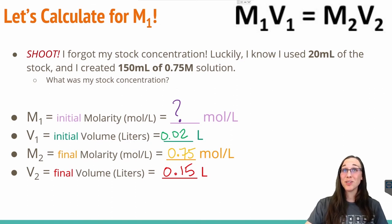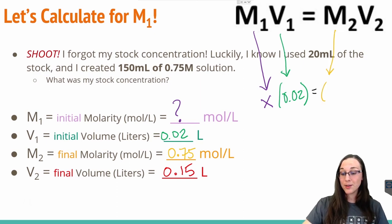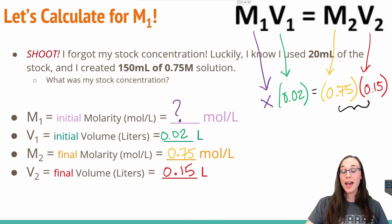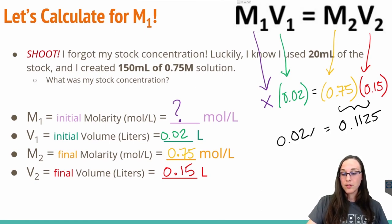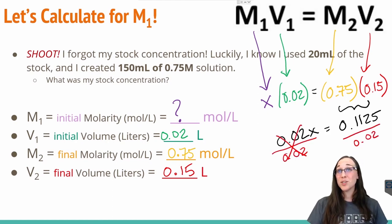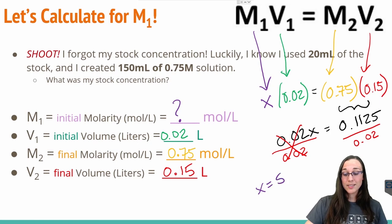Now I can plug and chug into my original equation. We're solving for M1 this time, so that's our x value. Our V1 is 0.02 liters. Our M2 is 0.75 moles per liter. And our final total volume is 0.15 liters. Let's start by multiplying together the two numbers we have, 0.75 and 0.15, to give us a value of 0.1125. We need to solve for x now, so we need to divide off the 0.02 in order to get x alone. When we divide 0.1125 by 0.02, we get a value of 5.625 moles per liter. Now we have the answer to our initial molarity. That is what my stock bottle contained.